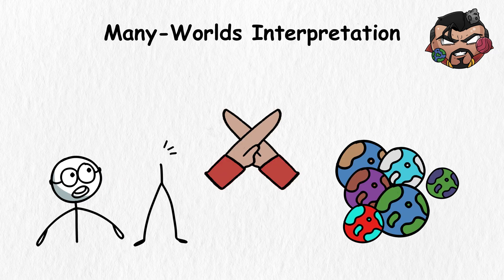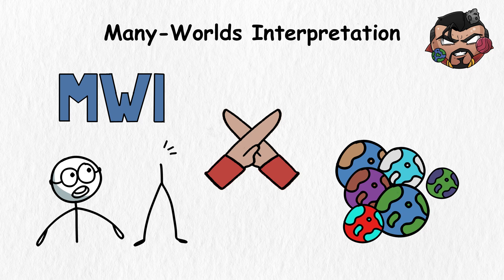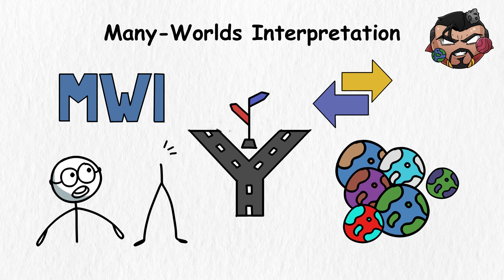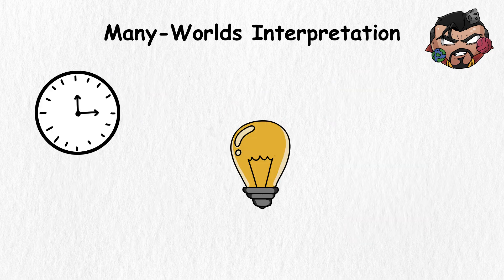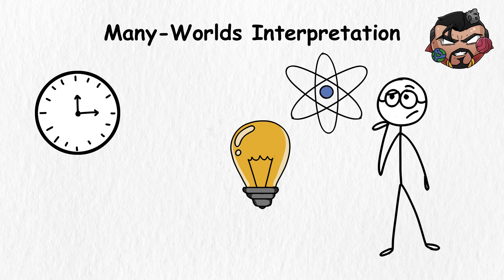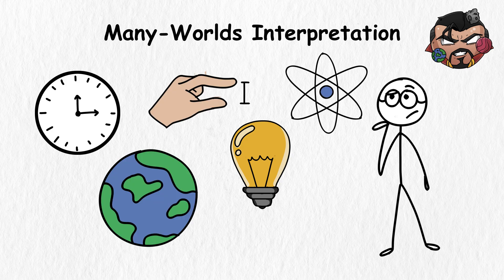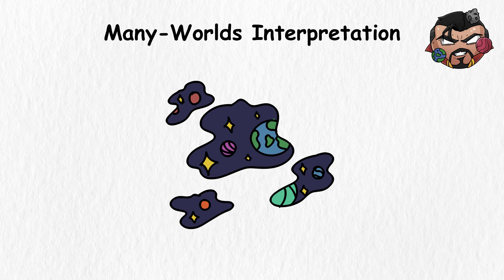But the Many Worlds Interpretation, or MWI, says that you can take both the left and the right paths simultaneously. The idea is that every time you make a decision at the quantum level, which is the smallest level in the physical world, the universe splits into multiple versions of itself.